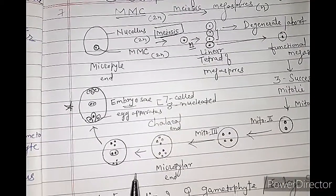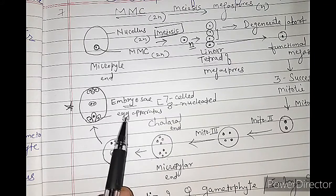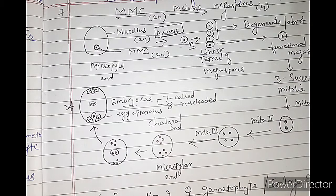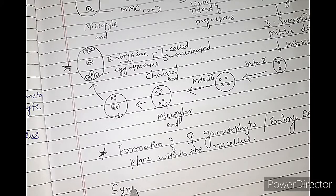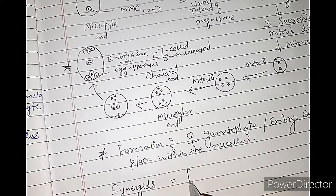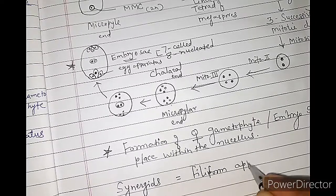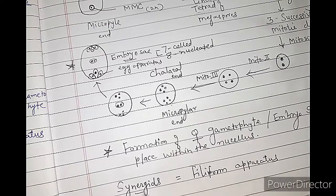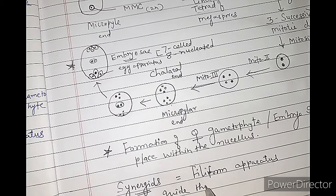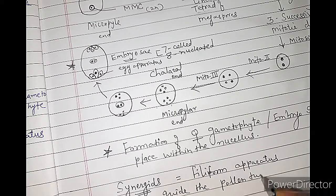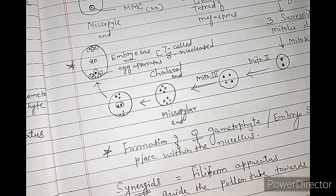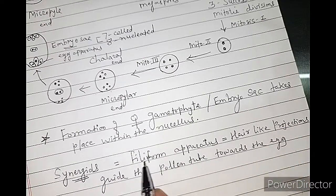This is the process of development of the female gametophyte. The two synergids are also called the filiform apparatus because they guide the pollen tube towards the egg. These synergids have hair-like projections, which is why they are called the filiform apparatus.